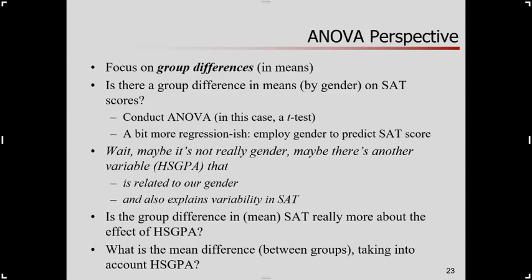In this case, is there a group difference in the means — that is, by grouping by gender — on SAT scores? If that's the only thing we were considering, we would be doing an ANOVA, or actually a t-test. And what we've already seen is we could do this through regression, using gender to predict SAT scores.